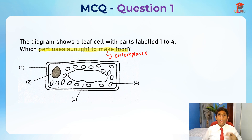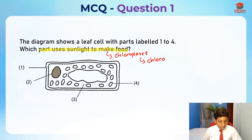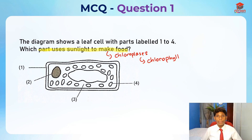How are the chloroplasts able to make food from sunlight? Basically, the chloroplasts have something called chlorophyll. This is a green pigment, and chlorophyll actually traps sunlight in order to make food for the plant.